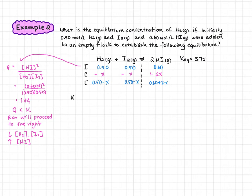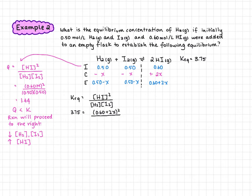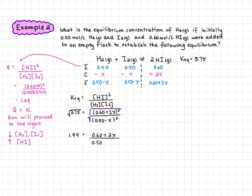We write our equilibrium expression and plug in our numbers. So 3.75 equals 0.60 plus 2x squared over 0.50 minus x squared — combining H₂ and I₂ since they have the same value at equilibrium. We take the square root of both sides to eliminate the exponents and make this easier to solve. That gives approximately 1.94 equals 0.60 plus 2x divided by 0.50 minus x.